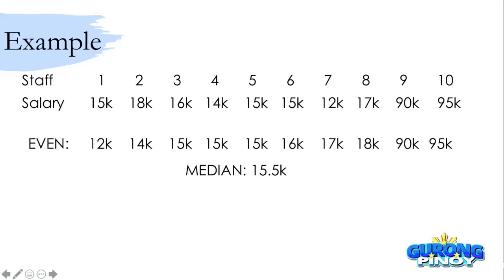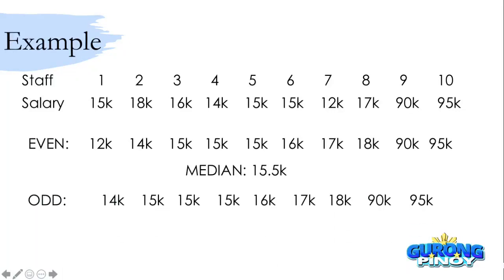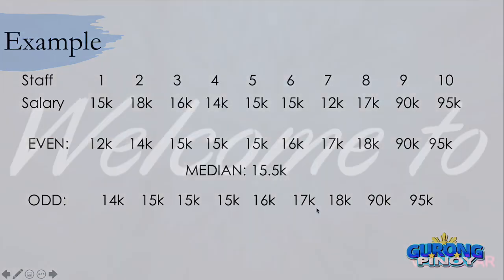Now, what if you have an odd score distribution? I'm using the same samples here, but in this case, I've dropped the 12,000. So as you can see, we only have 9 values. There's 14,000, 15,000, 15,000.